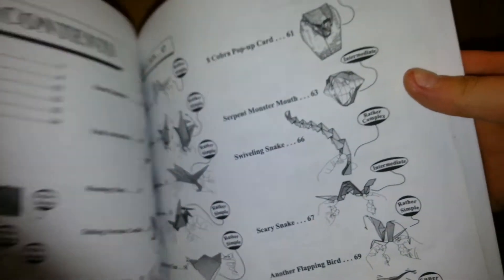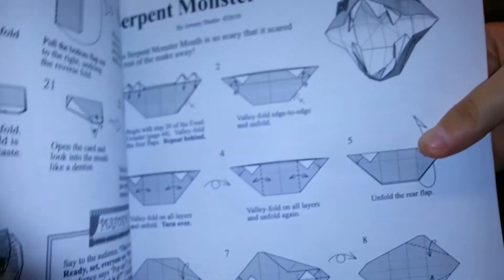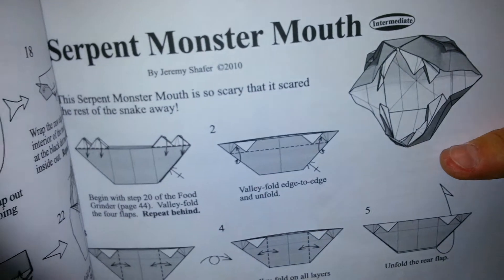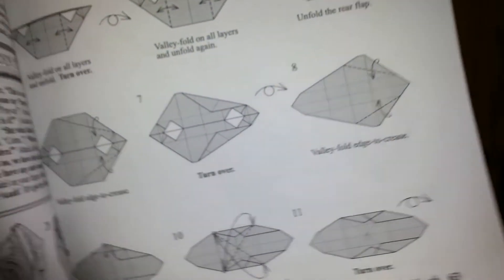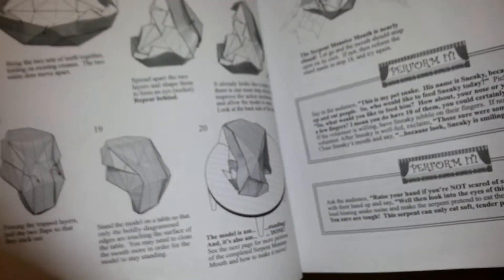And it's on page 63. And see, there it is. And it's pretty cool. Diagrams. Intermediate model fold. It's pretty fun to make.